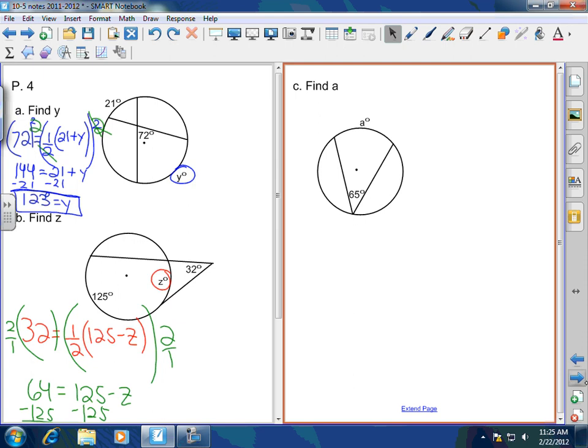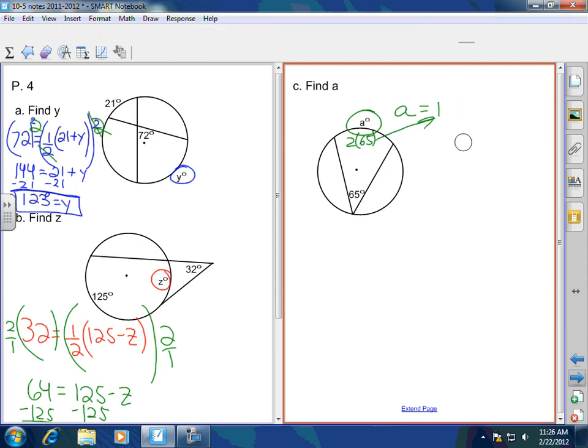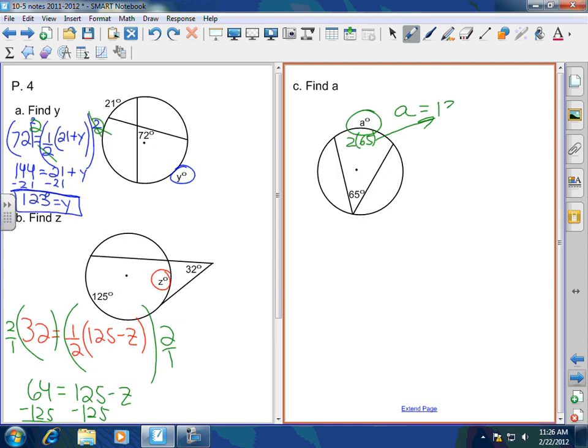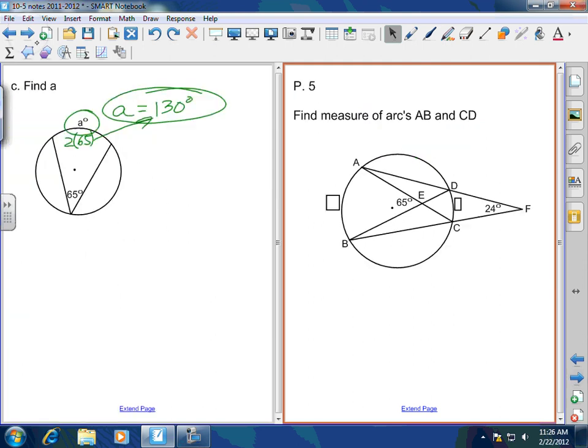How do we find this one? How do we find angle A here? Or arc A? A equals 170. This is an inscribed angle. So, A is twice the angle measure. So, 2 times 65 would be 170. Maybe I need to learn how to multiply. It's 130. I apologize. 130. I need to get my multiplication skills. That was an easy one.